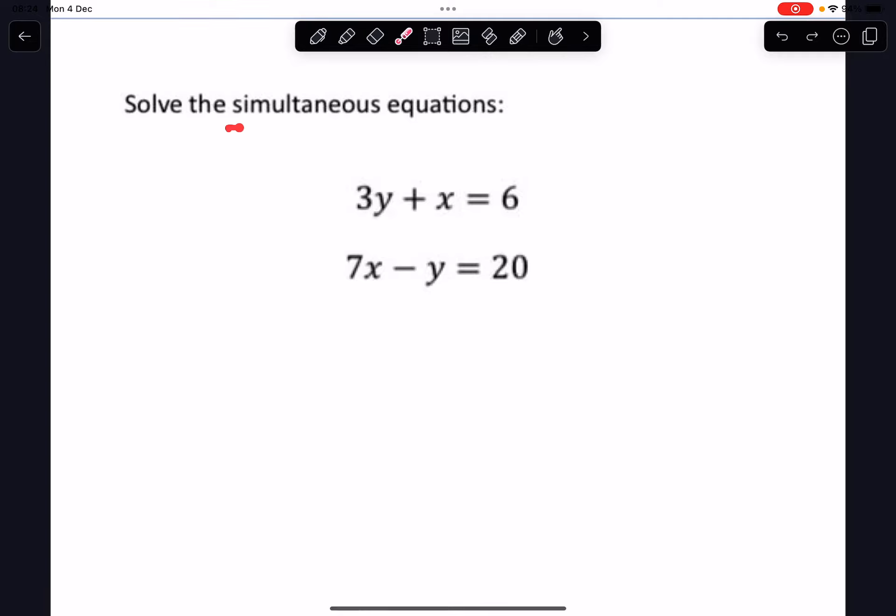So here we have two simultaneous equations, that just means we have two equations each one with an x and a y. So we have two variables and two equations. We can't solve each one on its own because we have two variables.